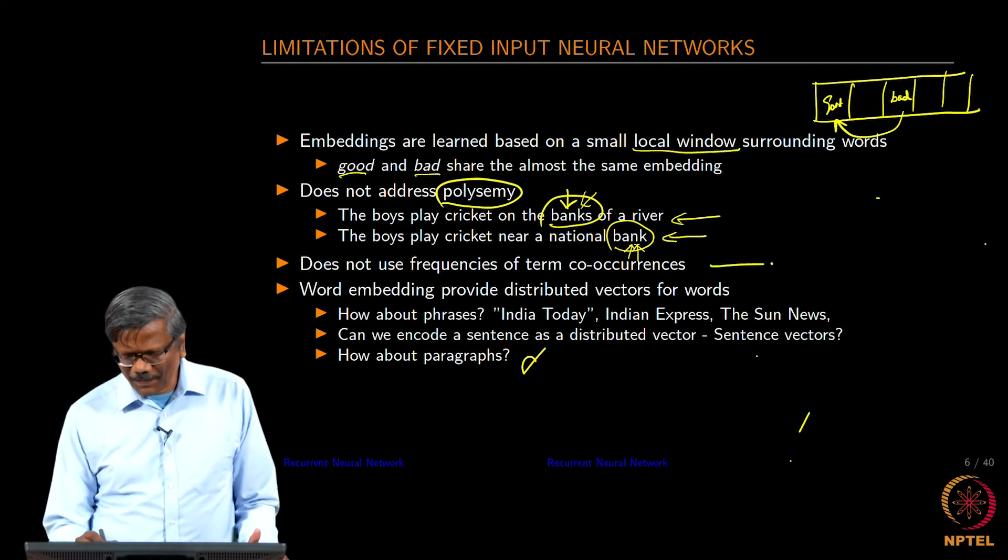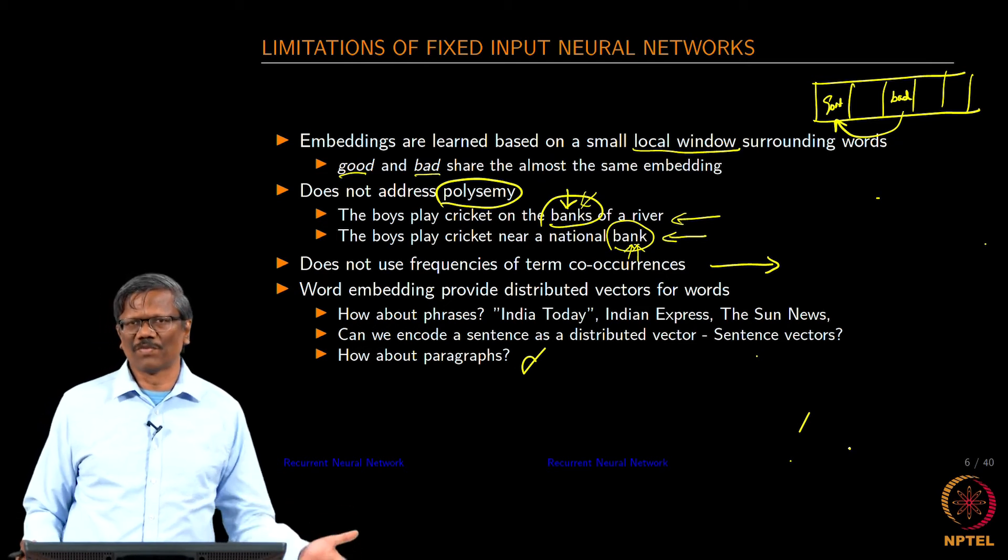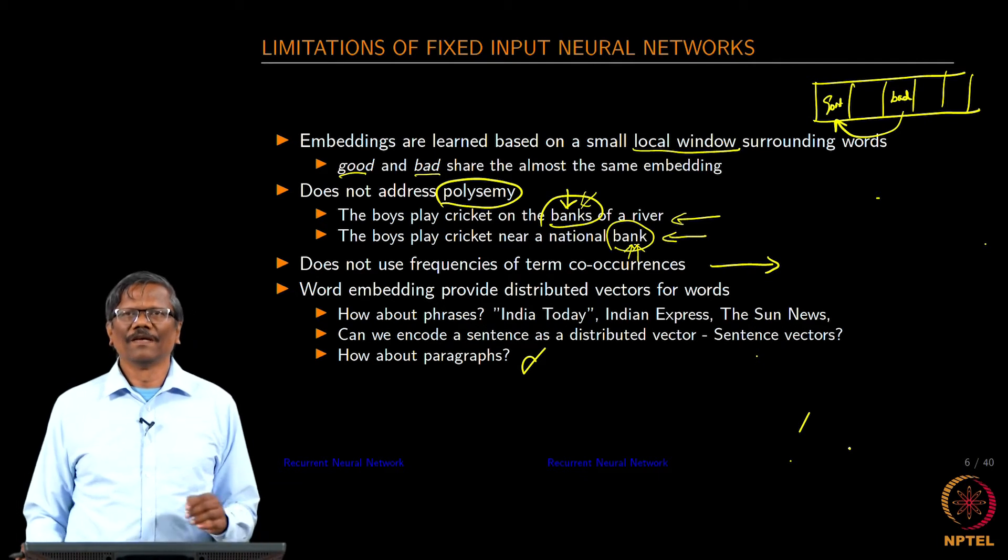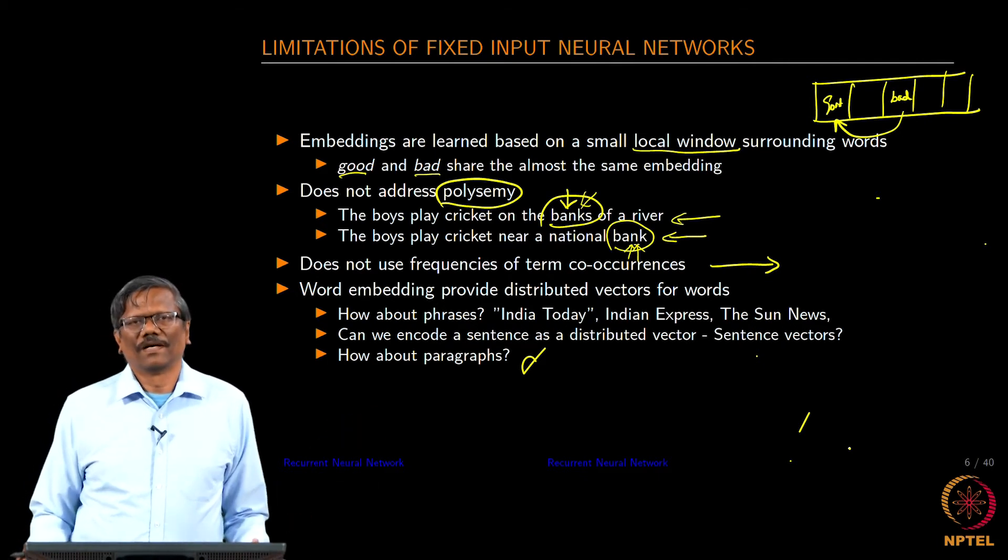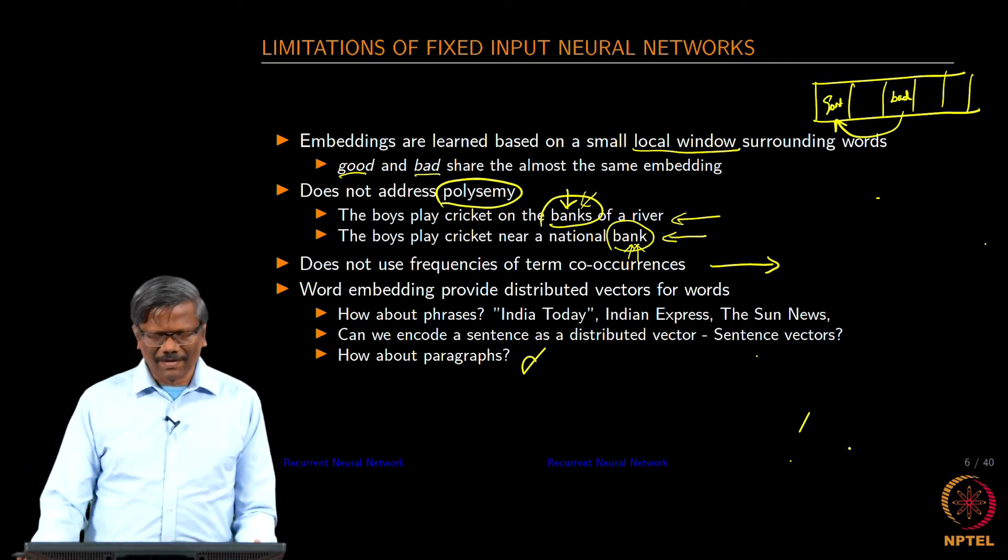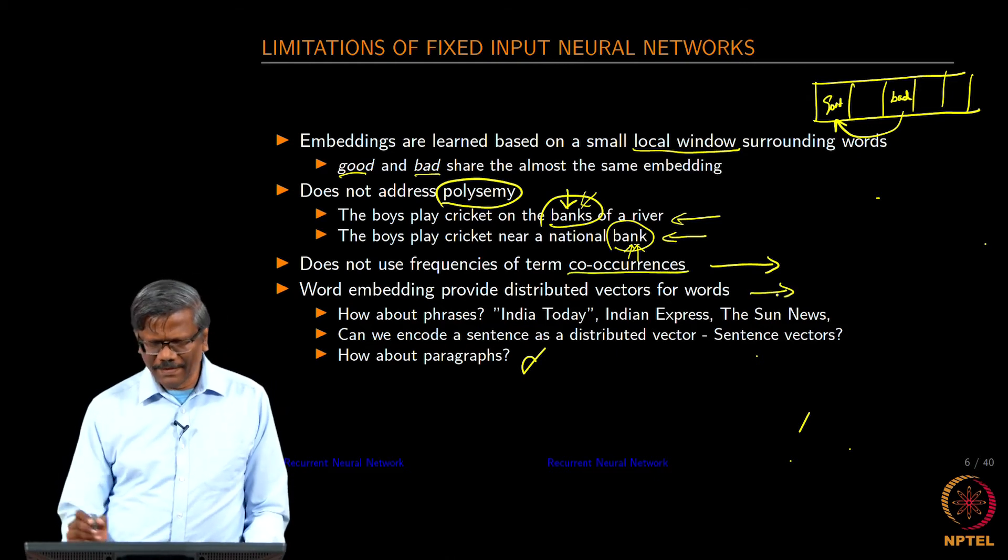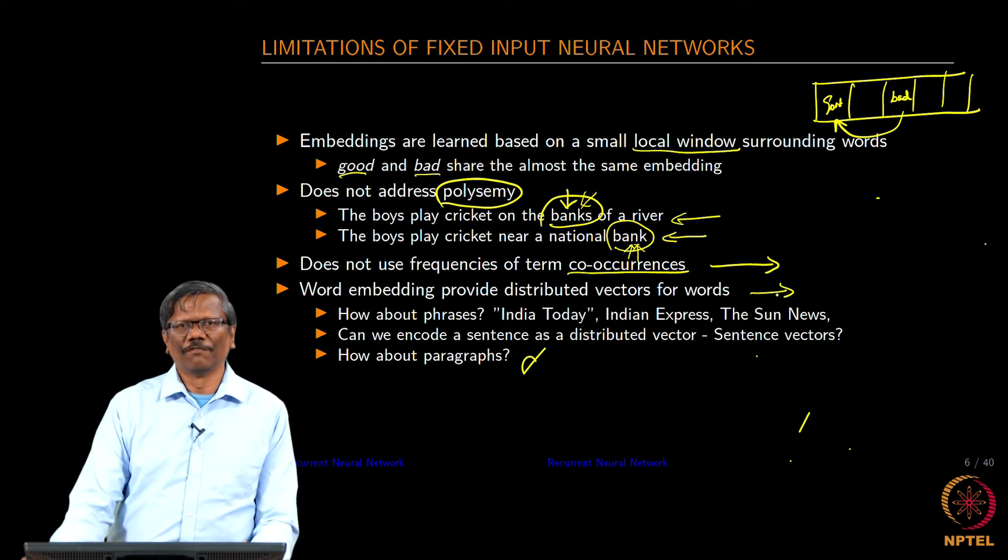One thing that you must have noticed so far - in the case of the neural network where we used CBOW model as well as skip gram, we completely ignored the frequency of the words in the vocabulary. That is another aspect that we want to consider. We are able to get the embeddings of the words in a distributed fashion.